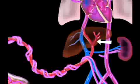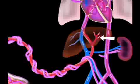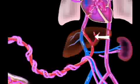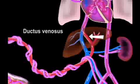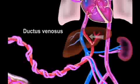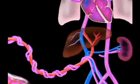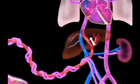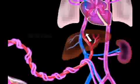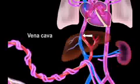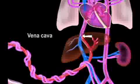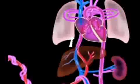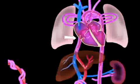About half the volume continues via the umbilical vein into the liver. The remaining volume enters a vessel called the ductus venosus, which exists only during fetal development and closes to become a hepatic ligament following birth. The ductus venosus travels a short distance and joins the inferior vena cava, where the blood mixes with deoxygenated blood returning from the lower regions of the body and continues through the vena cava into the right atrium of the heart.